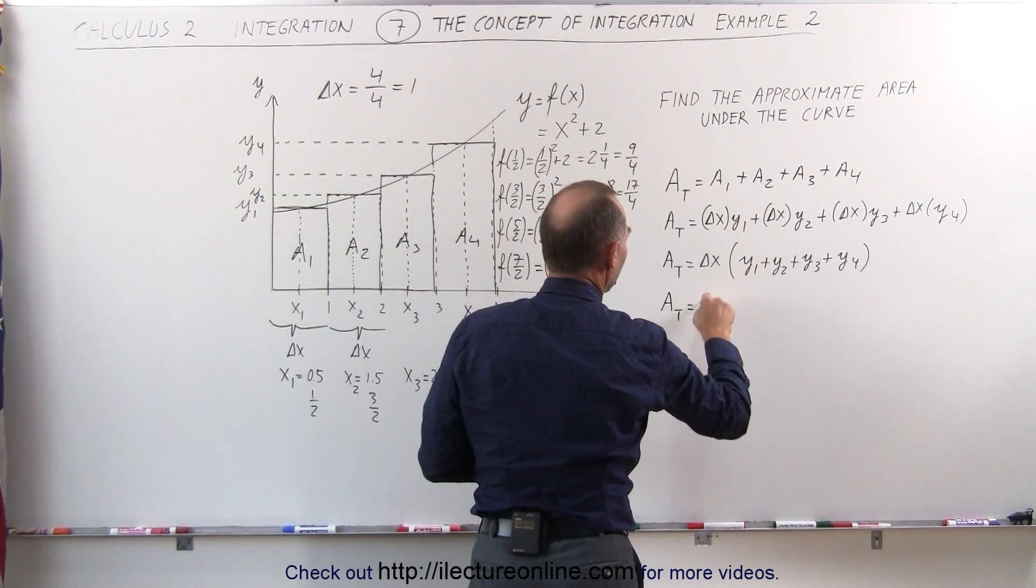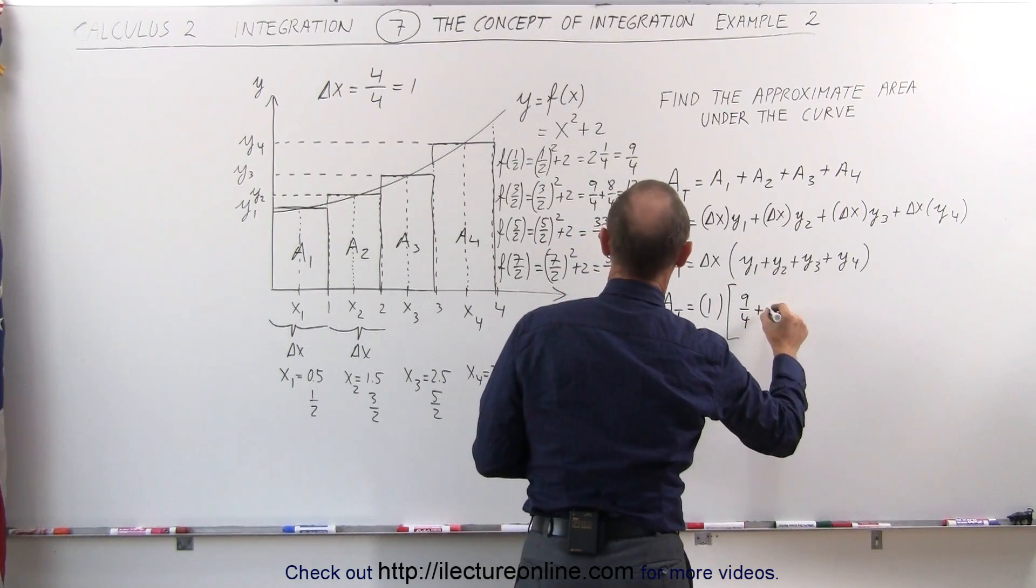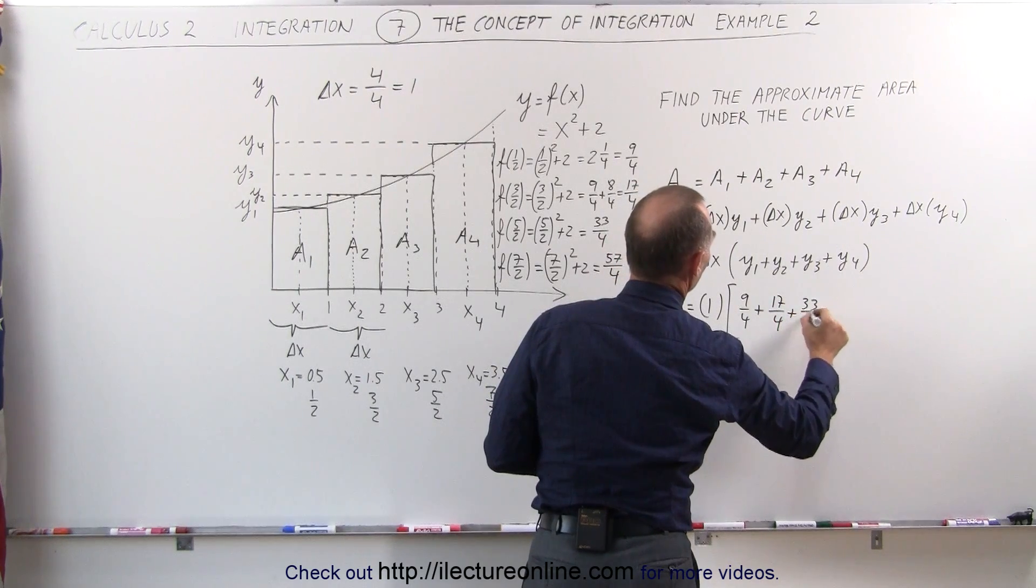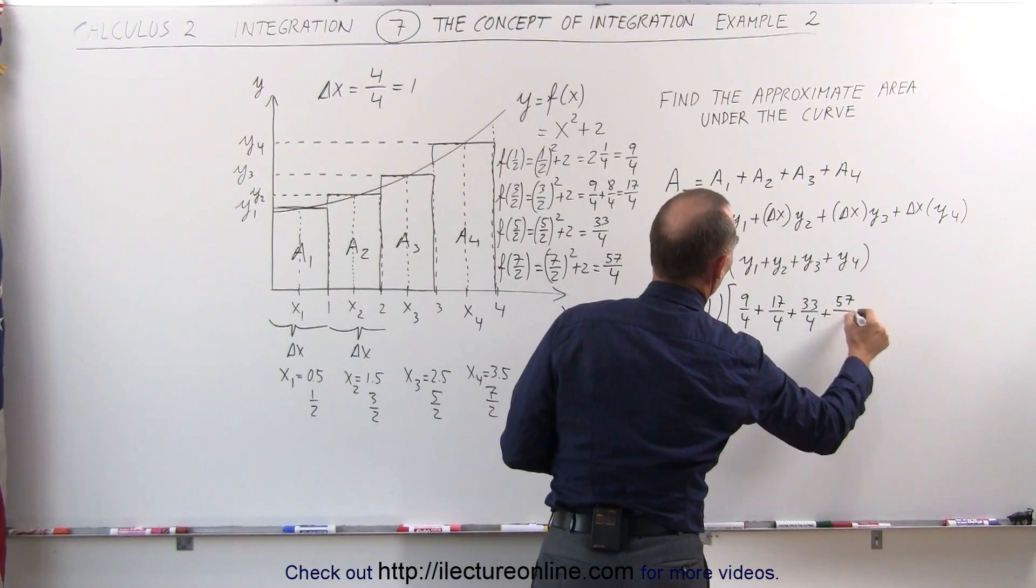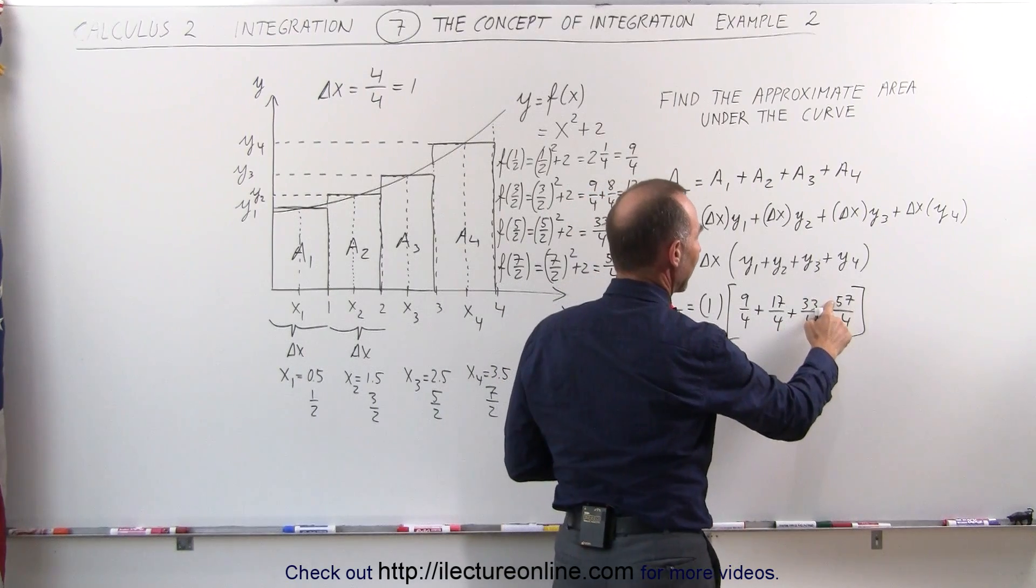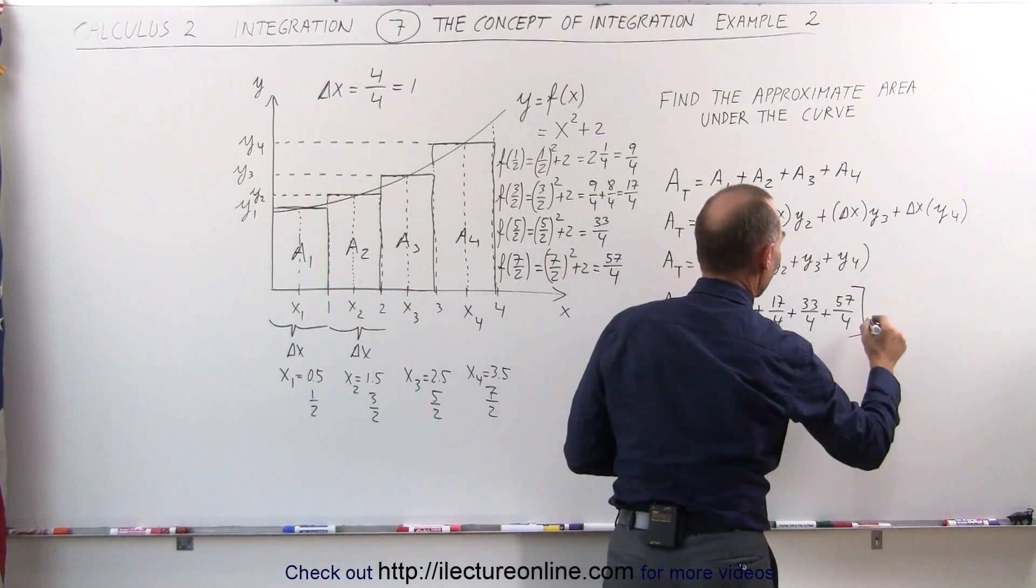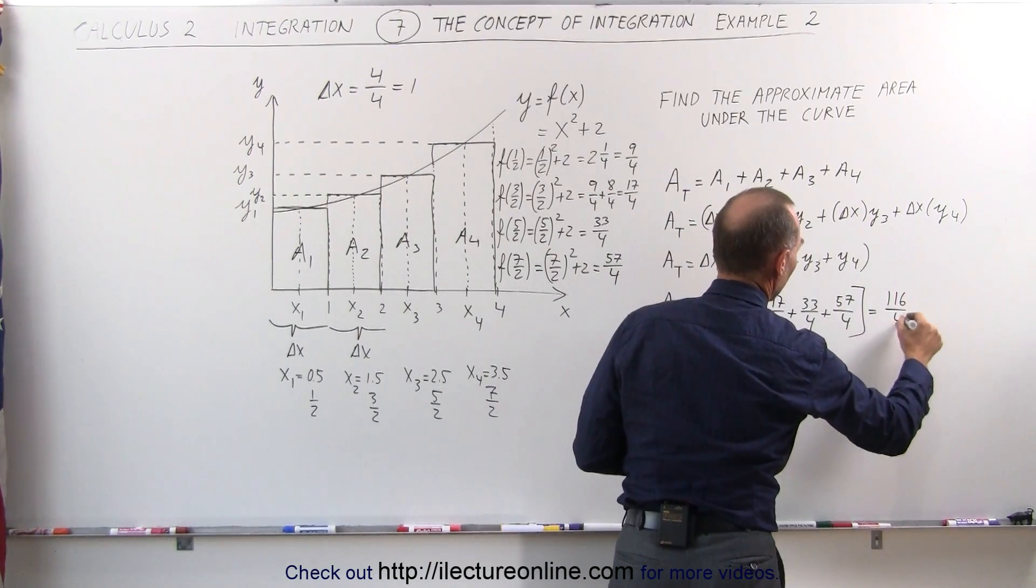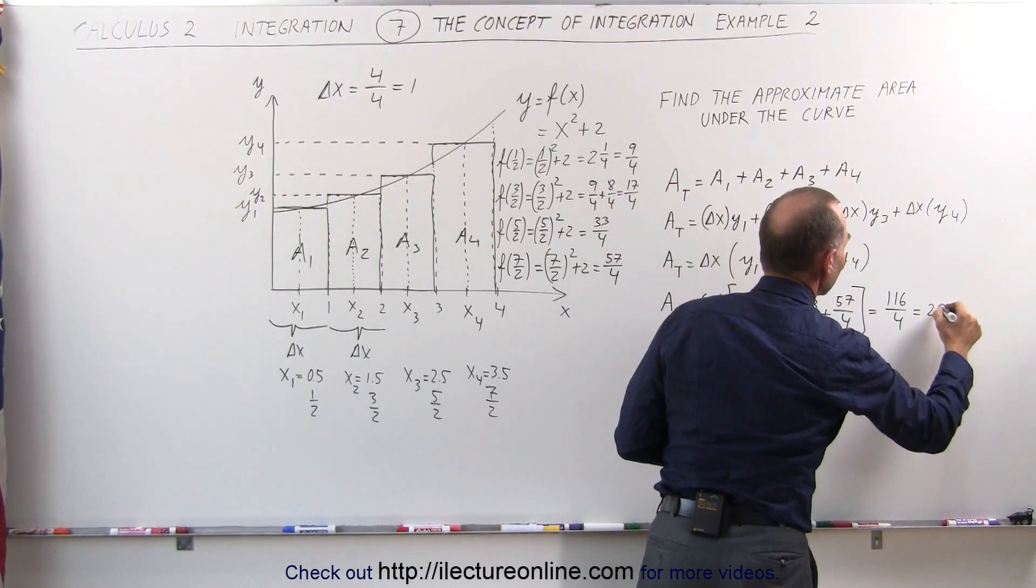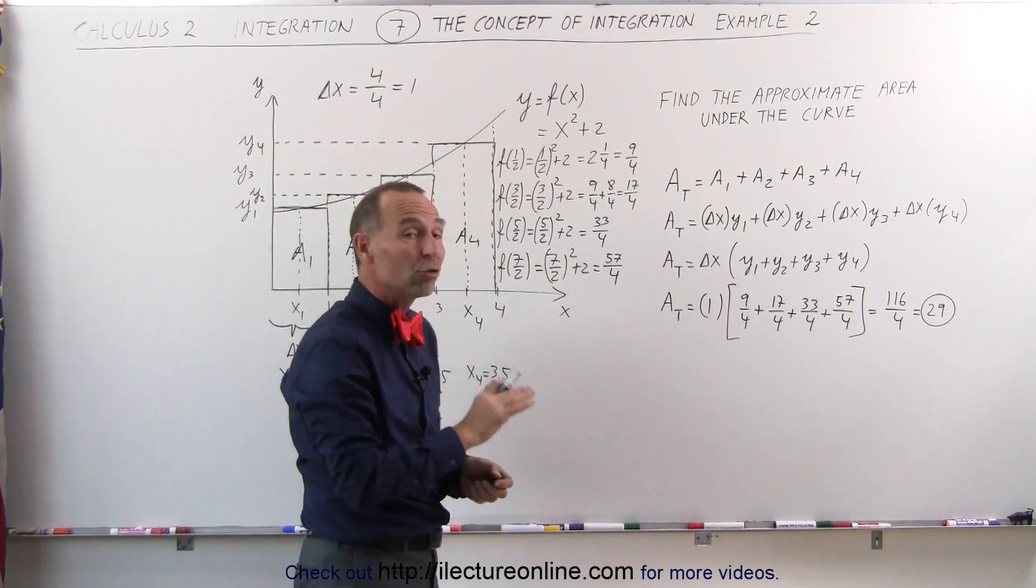The total area is equal to 1 times y1 is 9/4, plus 17/4, plus 33/4, and plus 57/4. Adding those together, that would be 90, that's 107, plus 9, that would be 116 divided by 4. 4 goes into 116 twenty-nine times. So the total area, as approximated by this method, is 29.